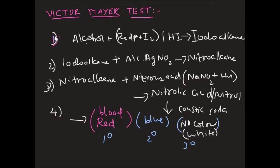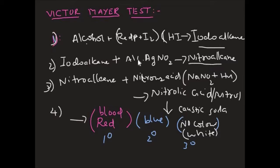In the Victor Meyer test: the first step is alcohol treated with red phosphorus and iodine, or hydrogen iodide, to give iodoalkane. The second step is this iodoalkane treated with silver nitrite to give nitroalkane. The third step is this nitroalkane treated with nitrous acid — NaNO₂ plus HCl gives nitrous acid.